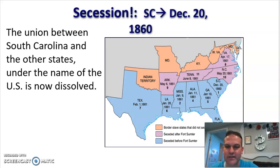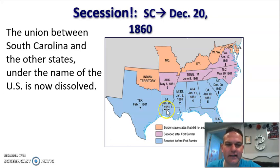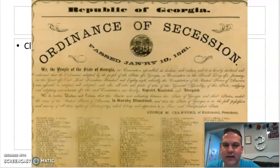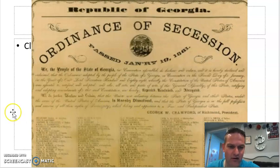Secession is one of your vocabulary words — make sure you write that down. Secession is the idea that you can leave the United States or leave a group that you've sworn allegiance to. South Carolina does it. Then in January, Florida's gone, Georgia's gone, Alabama's gone, Mississippi's gone, Louisiana's gone, and February 1st, Texas — poof, they're out. This is what an ordinance of secession would have looked like. This is Georgia's; they seceded January 19th, 1861 — basically saying the state of Georgia is hereby dissolved from the United States.